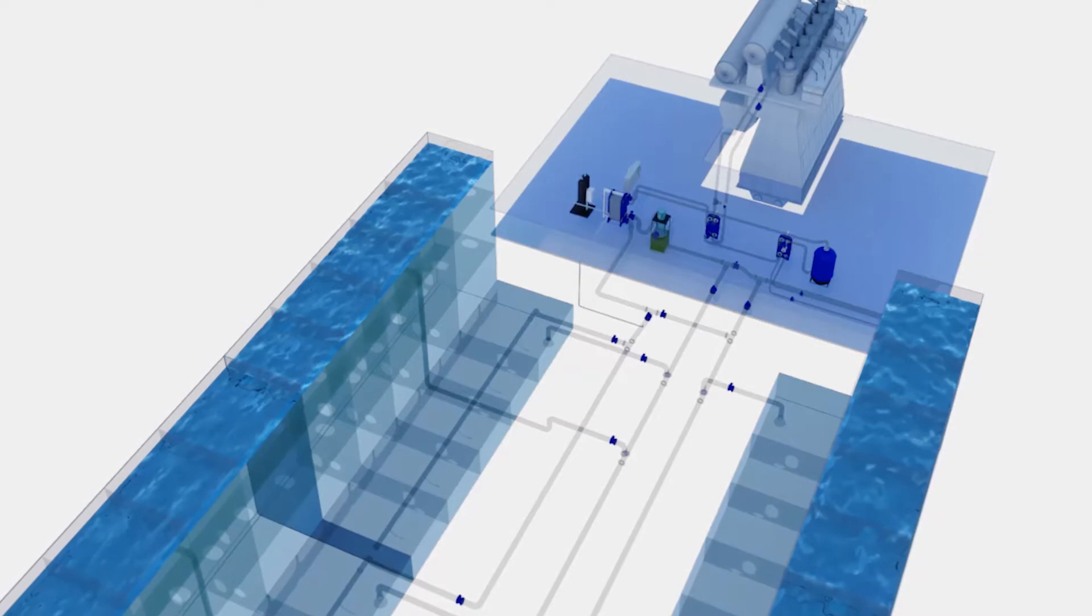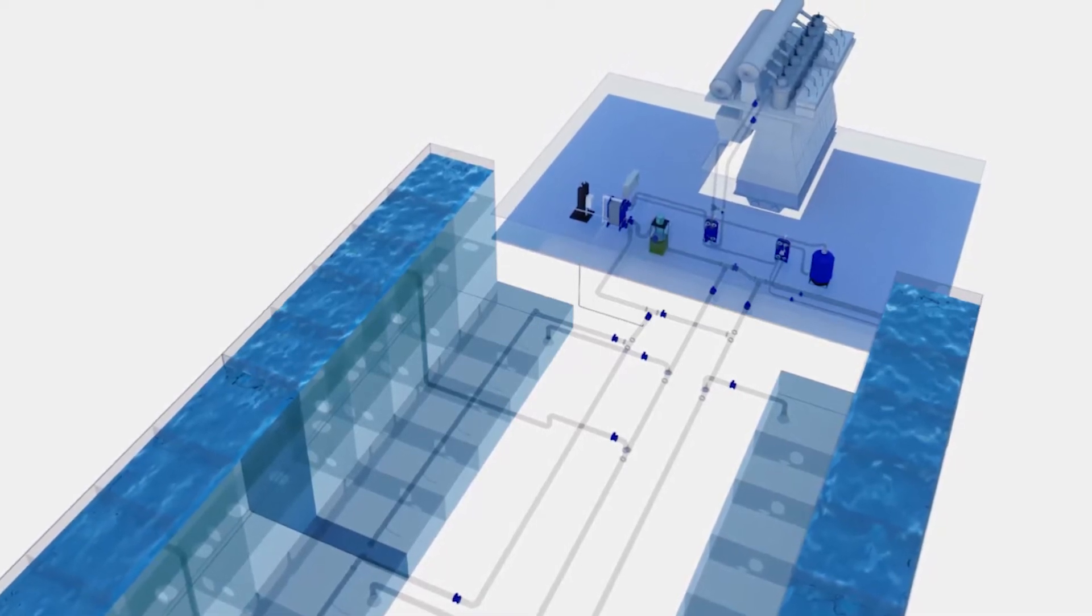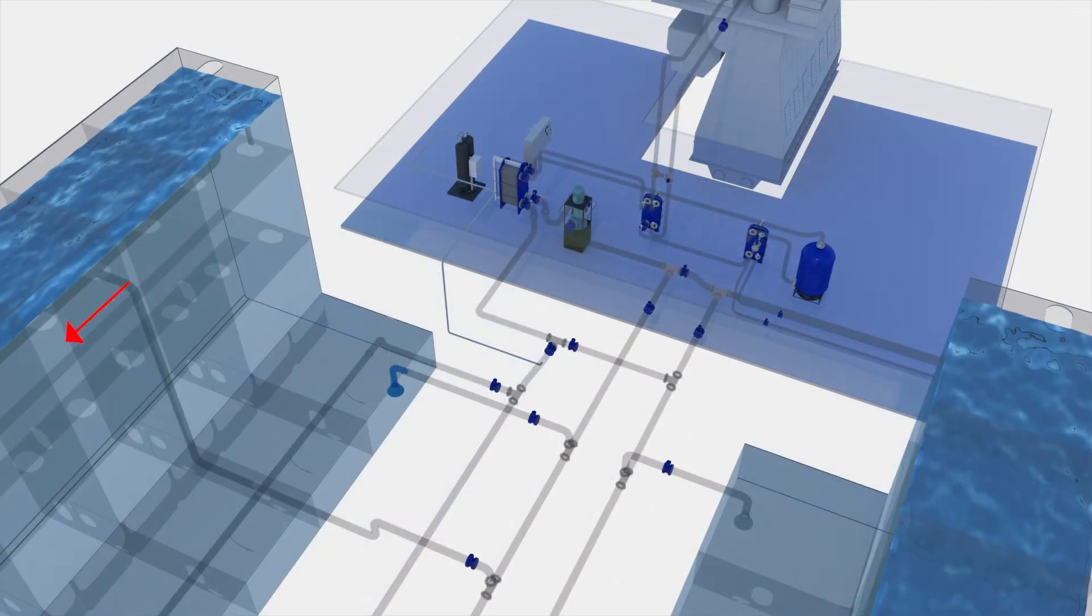The unique BWTS pasteurization process is simple and efficient in all turbidities, temperatures and salinities. Either from a ballast tank or from the sea, ballast water is pumped through the pasteurizing unit.